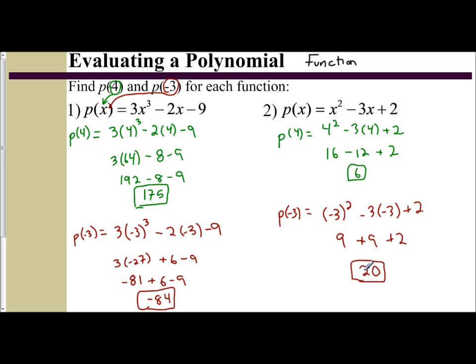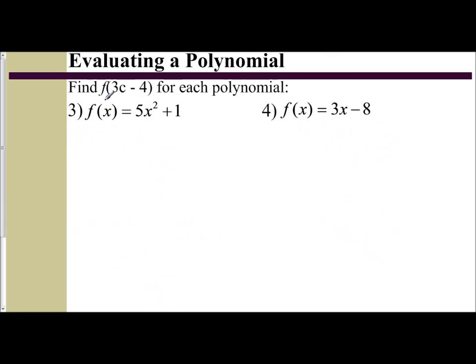So in these two examples, these four evaluating a polynomial using function notation problems, we're dealing with numerical values we're plugging in. Find P(4). Find P(-3), given your P function. We can also use function notation to evaluate a polynomial for a variable expression. F(3c - 4). Find that value, given F(x) equals 5x² plus 1.